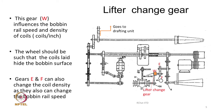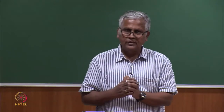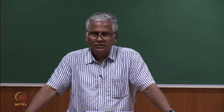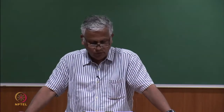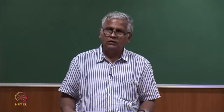The other thing we need to change on a roving frame is the lift. We may need to change the traverse rate of the bobbin rail, because the bobbin rail keeps moving up and down and the velocity needs to be adjusted to get the right coil spacing on the bobbin. The gear that helps in changing this is known as the lifter change gear — it changes the velocity of the bobbin rail.